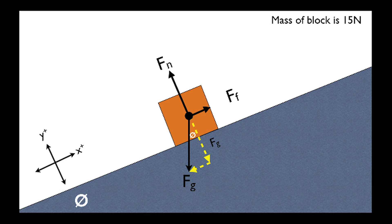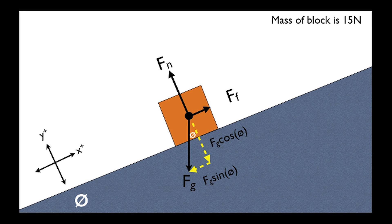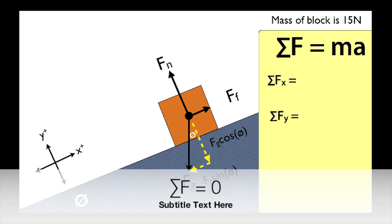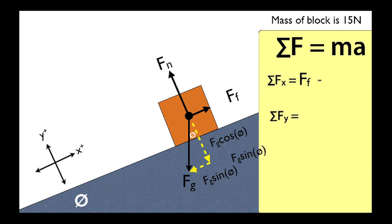Now use trigonometry to find the parallel and perpendicular components of gravity. Since this block is stationary, the sum of all the forces is zero, or the net force is zero. This means that the horizontal forces will cancel off, and the vertical forces will cancel off to equal zero. Once we have this information, we can solve for whatever we need.